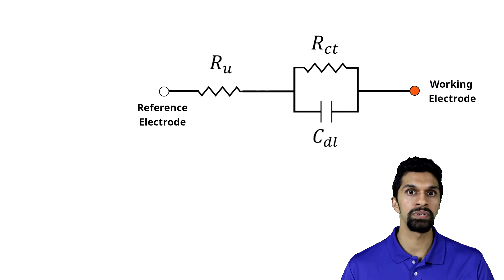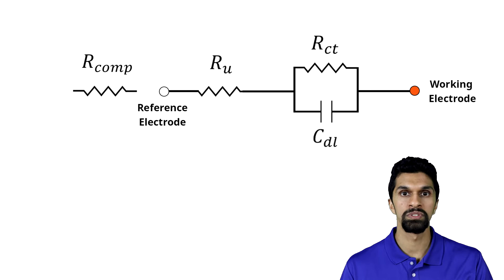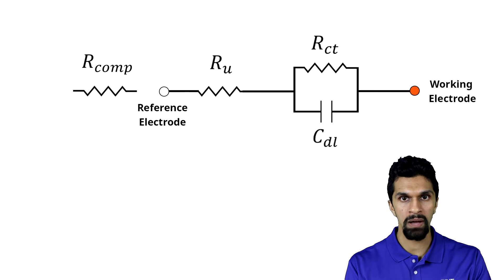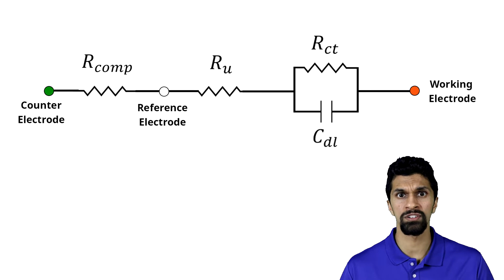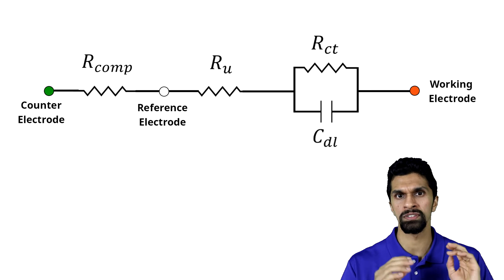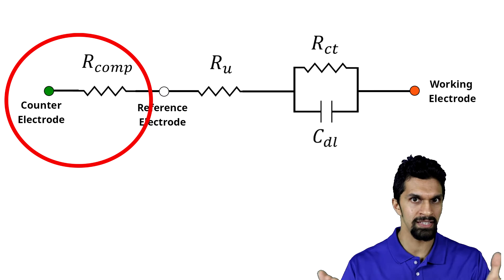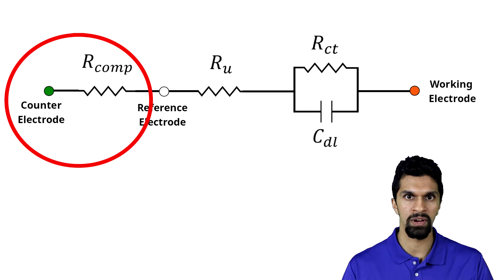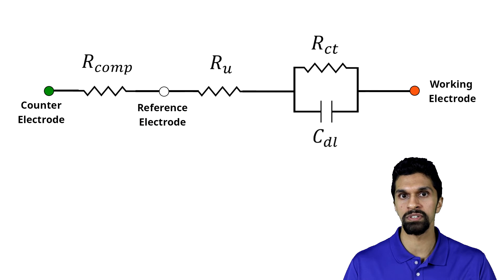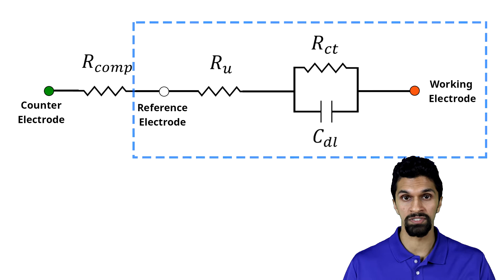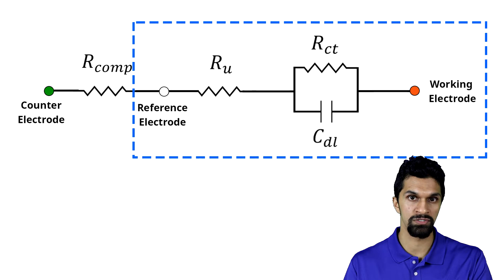And then we have another resistor RComp, which is in between the counter and reference electrode. For understanding IR drop, we mostly don't care about RComp and the counter electrode, but I've added it into this diagram just for completion. We will mostly be focusing within the Randles circuit between the reference and working electrode.